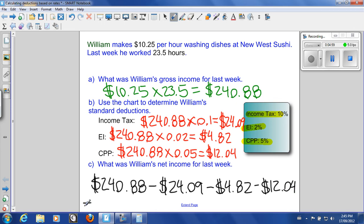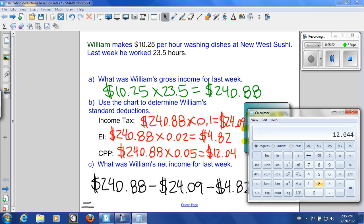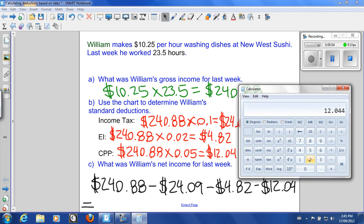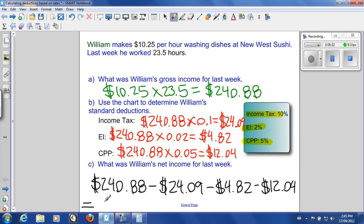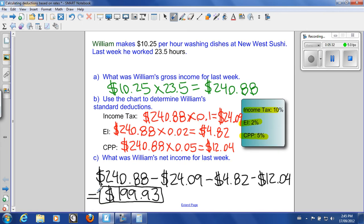So what does this give us? We'll bring that up. $240.88 minus $24.09 minus $4.82 minus $12.04, $199.93. So William's net income for last week was $199.93. That makes sense. Thank you.